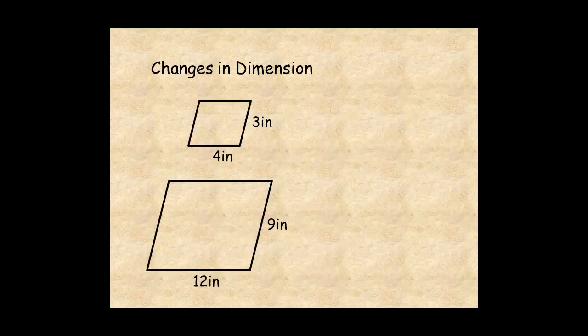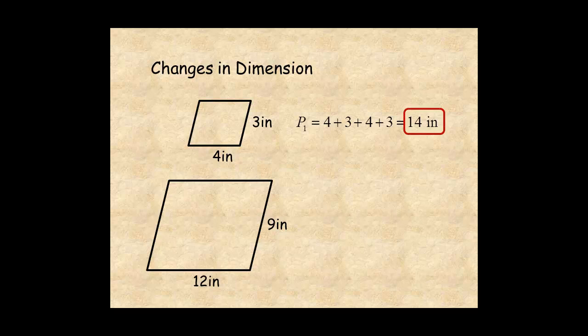In this example, the side lengths of the smaller parallelogram are 4 inches and 3 inches. So the perimeter is 14 inches. The dimensions of the other parallelogram are 3 times larger. So the perimeter is 3 times larger, or 42 inches.